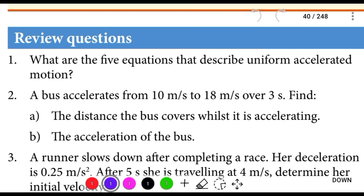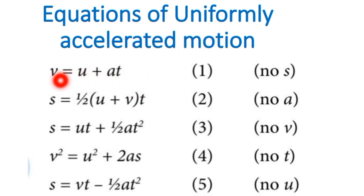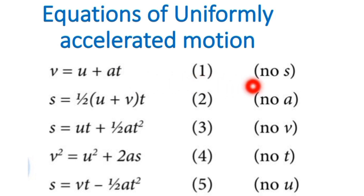Question 1: What are the five equations that describe uniformly accelerated motion? The equations of uniformly accelerated motion are as follows. Equation one: final velocity is equal to initial velocity plus acceleration times time.